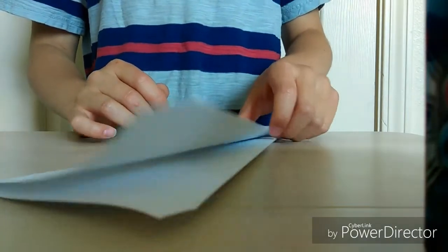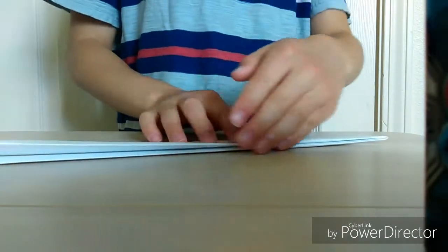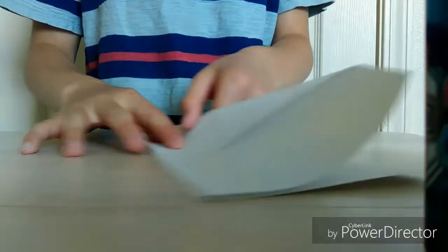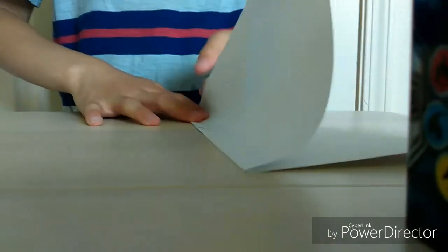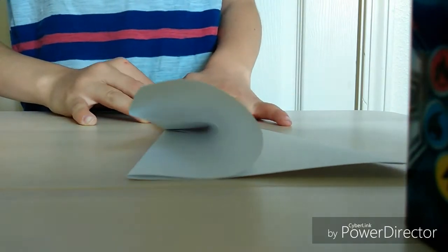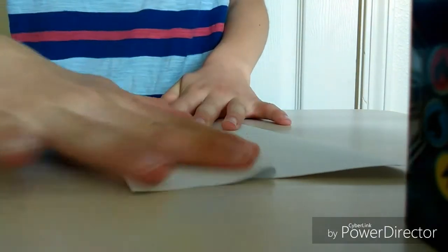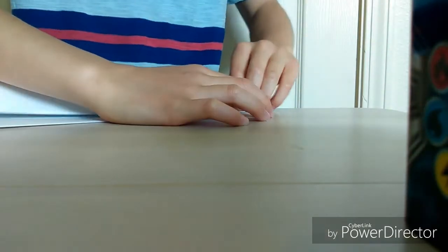Now, the final step is to make the wings. Take this side of the paper and fold it down right to the bottom of the paper here. So then it makes your wing. It should look like this.